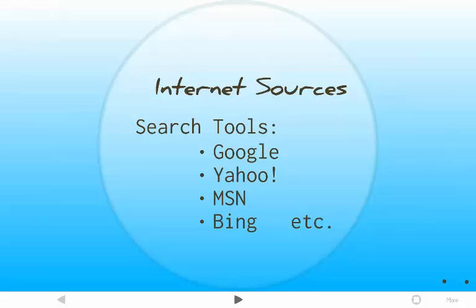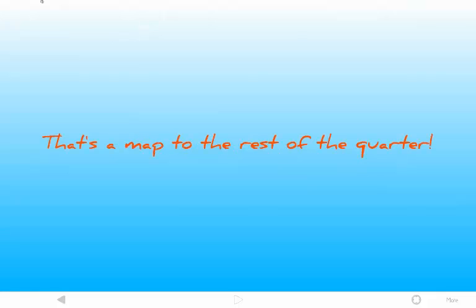And for internet sources, most people are familiar with a lot of these things — Google, Yahoo, MSN, Bing. These are different search tools, and this is how you get to those internet sources. You need a search tool. So this is sort of a road map to how this quarter is going to go. We're going to talk about these different types of sources throughout the quarter — how to find them, how to use them, what they're good for. Hopefully you'll get enough skills and practice with the GHC resources that you can transfer those skills to other library systems as well.